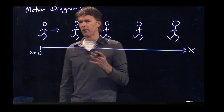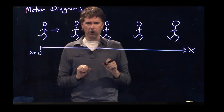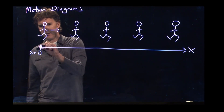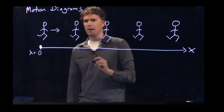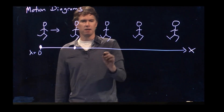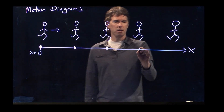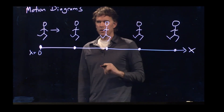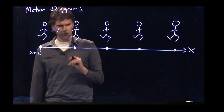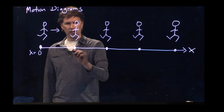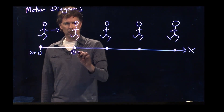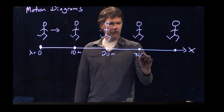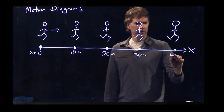How do we deal with motion diagrams? You don't have to draw images over and over again — it gets a little cumbersome. Just make it a dot. Person at time one, person at time two, time three, time four, and time five. And then if we give you some numbers here, it's going to make good sense. Let's say this is 10 meters, this is 20 meters, this is 30 meters, and this is 40 meters.